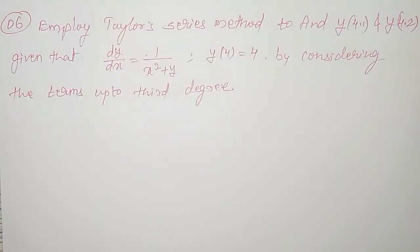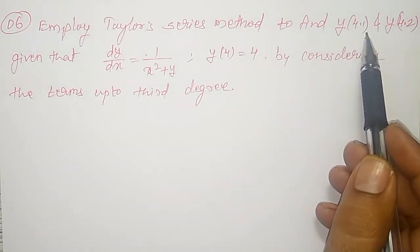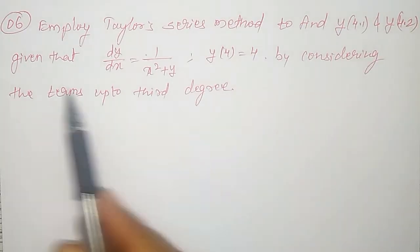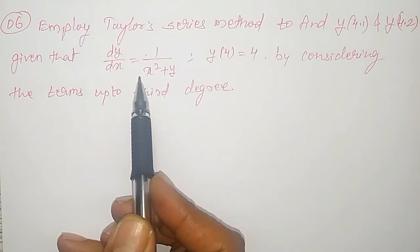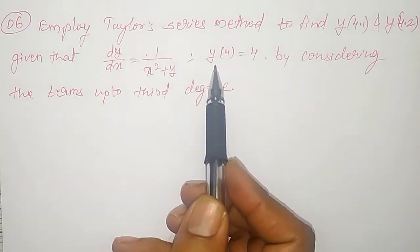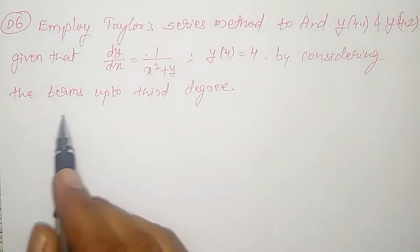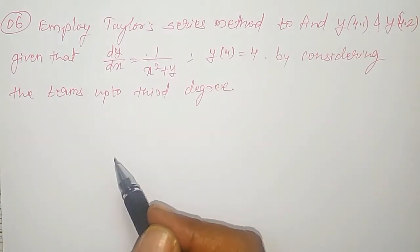In this video, one best example on a Taylor series method to find y(4.1) and y(4.2) from the given differential equation dy/dx = 1/(x² + y) and y(4) = 4, by considering the terms up to third degree, I am going to solve here.